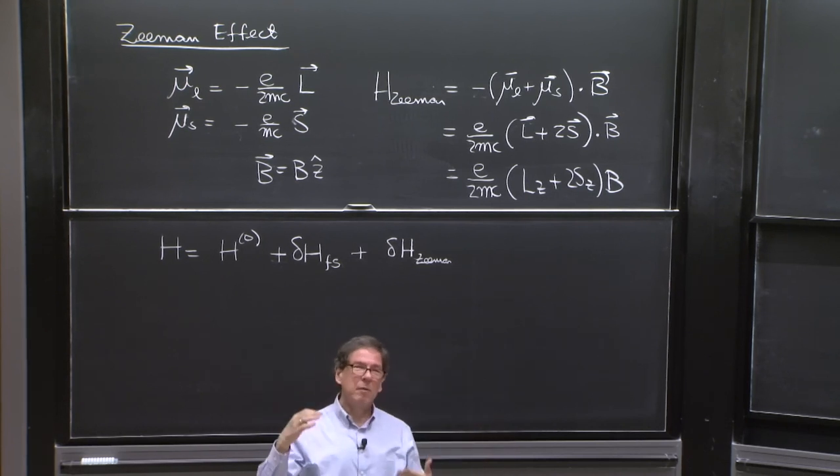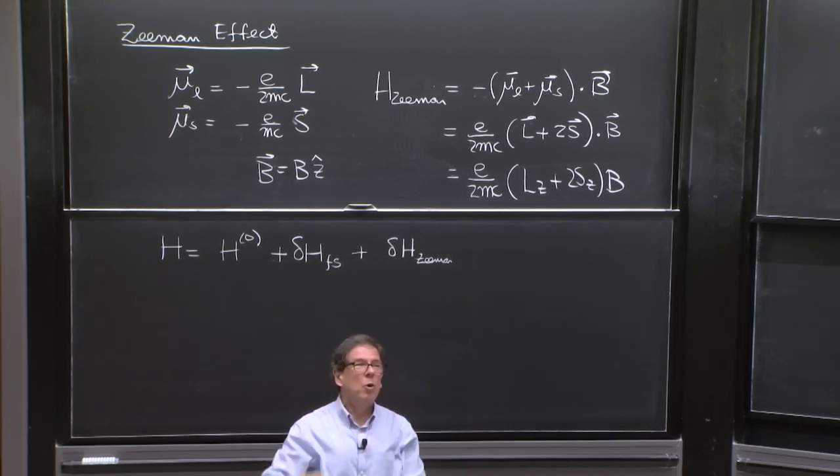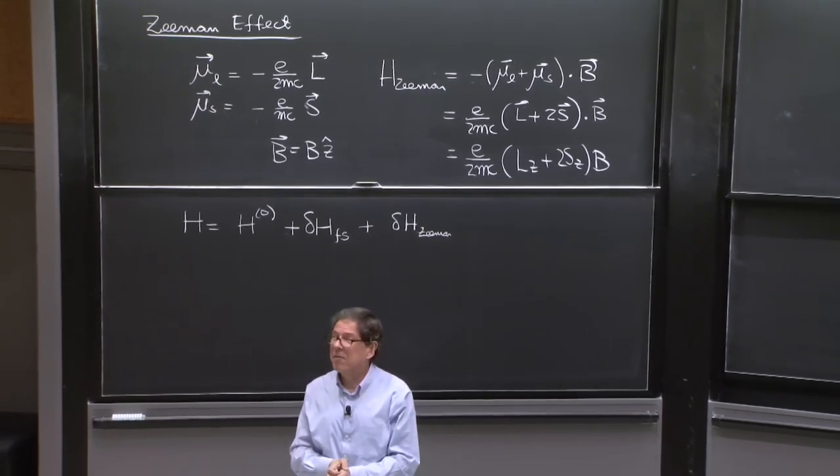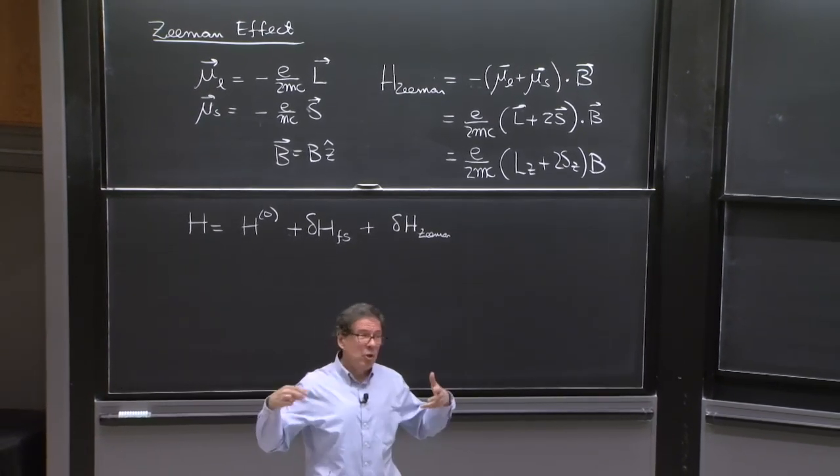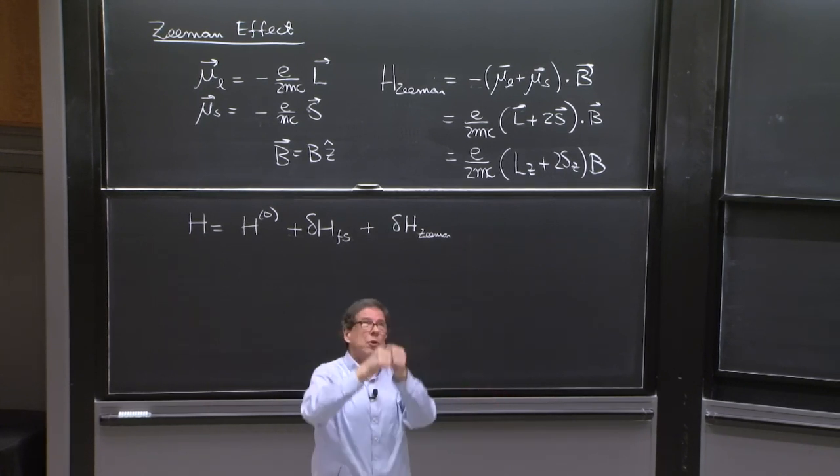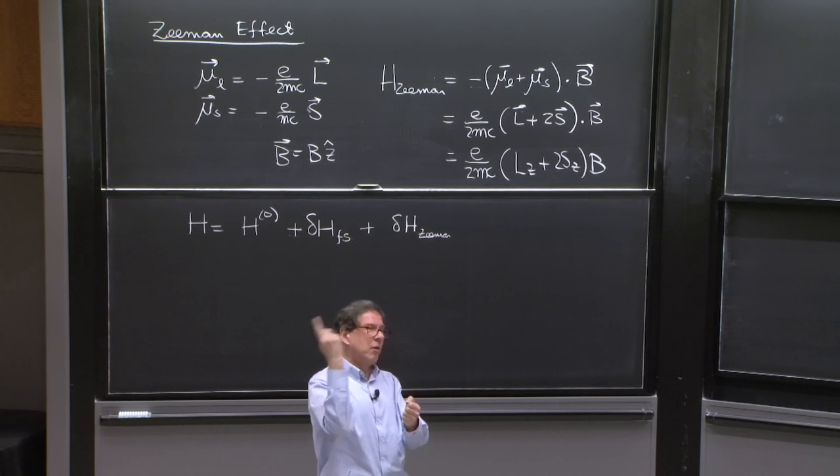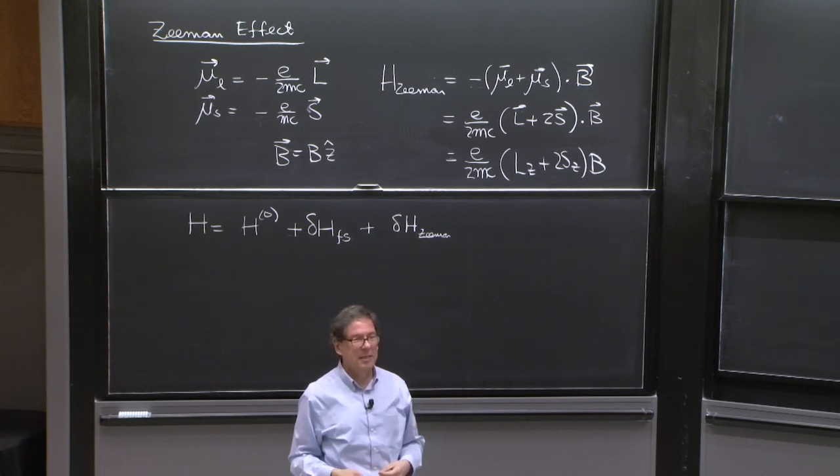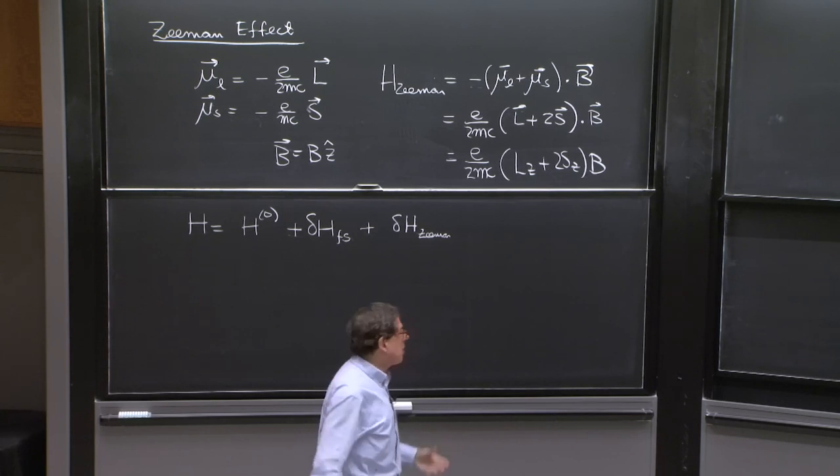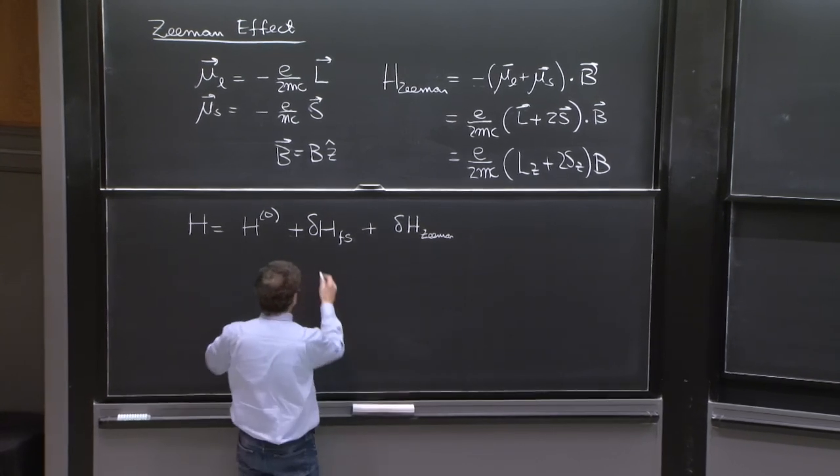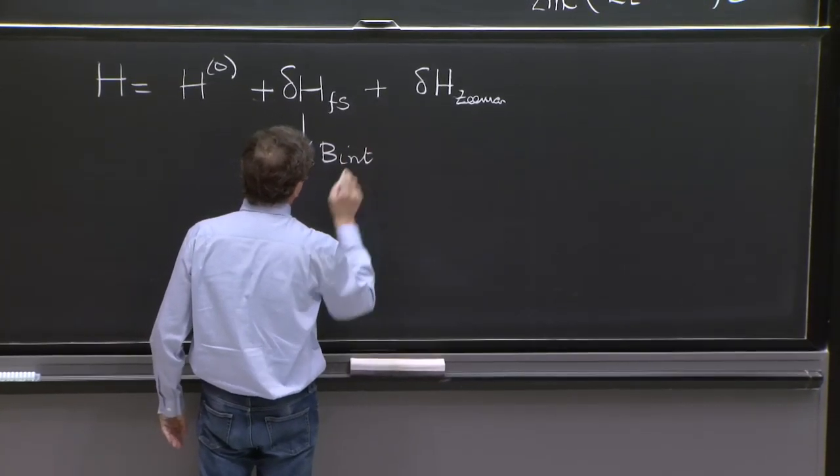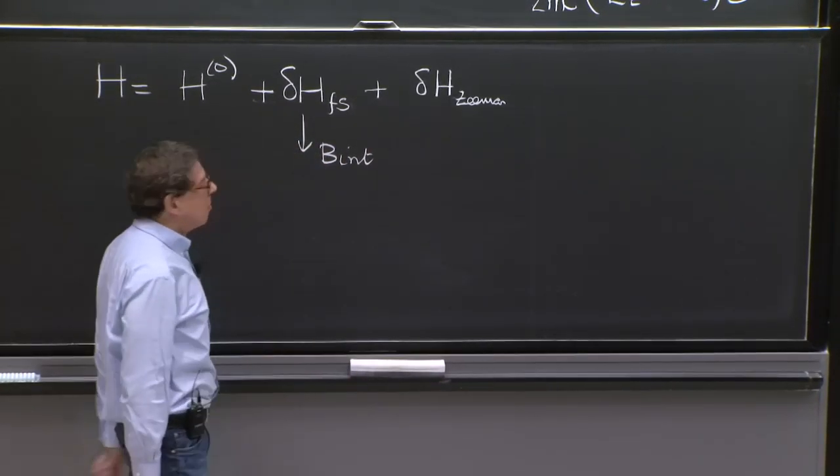There's a static electric field. But whenever you are in motion, a static electric field in the lab also has a magnetic field by relativity. And you do see a magnetic field. And you could also imagine it as you are the electron, and the proton is going around you and creates at the center of the loop a magnetic field. In any case, you've looked at that magnetic field. And we can call it the internal magnetic field due to spin orbit.